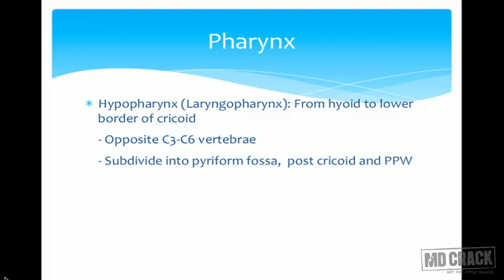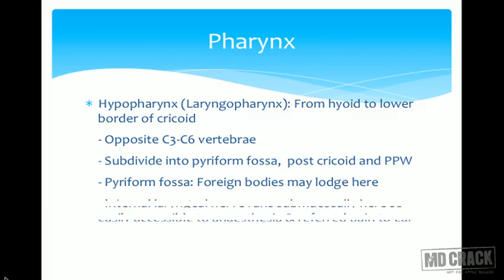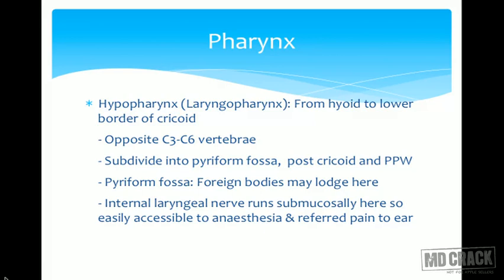The laryngopharynx is subdivided into three subsites: pyriform fossa, post-cricoid region, and posterior pharyngeal wall. The clinical importance of the pyriform fossa is that foreign bodies lodge here. The internal laryngeal nerve runs submucosally in the pyriform fossa, making it easily accessible to anesthesia; referred pain to the ear is because of involvement of this nerve.